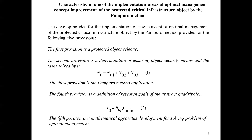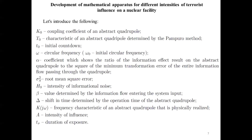The fourth provision is the definition of research goals of the abstract quadripole. Based on the mathematical material presented above, the following research goals of the abstract quadripole can be proposed. The first goal of the study is to find the frequency characteristics of the abstract quadripole. It will show how useful information is transferred with the given parameters of the input information flow and information noise entering the input of the abstract quadripole. This characteristic is primarily determined by the number of all means of ensuring safety of the protected object. Secondly, it should minimize the mean square error during the operation of the abstract quadripole.